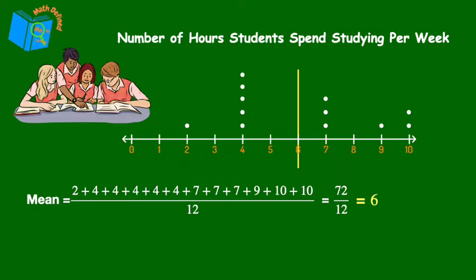The first step in finding the MAD is to calculate the distance that each data point is away from the mean of 6. So let's look at this first data point of 2. To find its distance away from the mean of 6, we need to subtract 6 minus 2. So its distance away from the mean is 4.